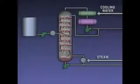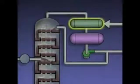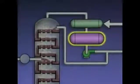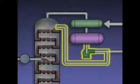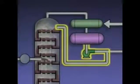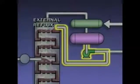Distillation systems use several methods to help maximize the purity of the products. One of these methods is called refluxing. The vapors coming off the top of the tower are condensed in a condenser and then collected in a receiver. Part of the liquid from the receiver is sent to storage or to other units in the plant as the tower's overhead product. The rest of the liquid is pumped back into the top of the tower. The liquid that's reintroduced into the tower is called external reflux. Because it consists of liquid that was cooled in the condenser, the external reflux is cooler than the liquid in the top of the tower.